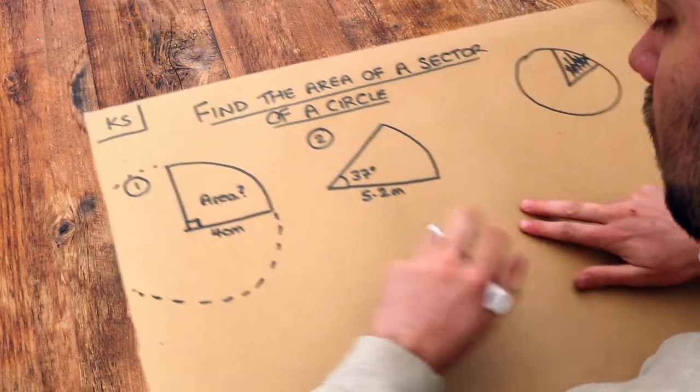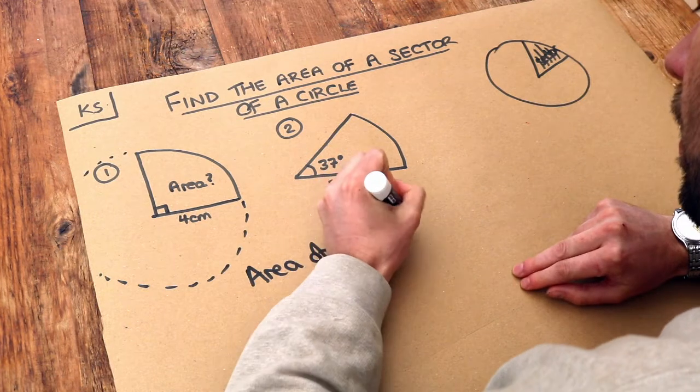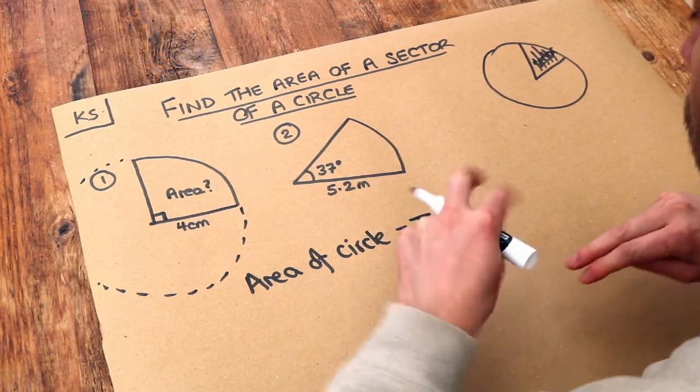Now, do we know how to find the area of a circle? Well, the area of a circle is just π. Remember, π is just a special number, meaning 3.141, etc.